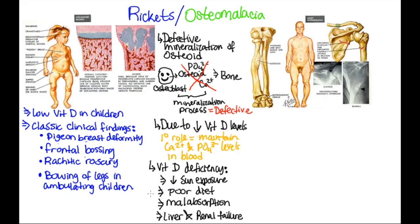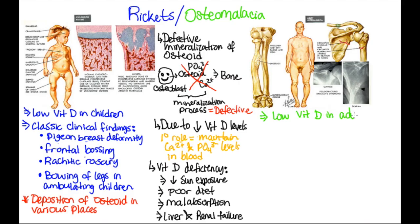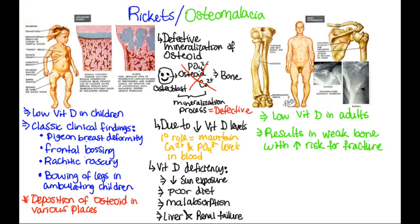The common theme in all of these is abnormal mineralization of osteoid — basically deposition of osteoid in various places. Osteomalacia is due to low vitamin D in adults, and results in weak bone with increased risk for fracture. Bone is always being turned over: osteoclasts are always removing bone and osteoblasts are always laying down bone. If osteoclasts remove bone but osteoblasts lay down bone that can't be mineralized, you end up with weak bone that can fracture.